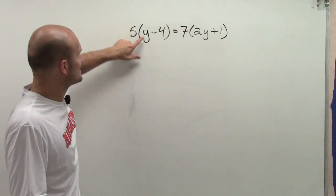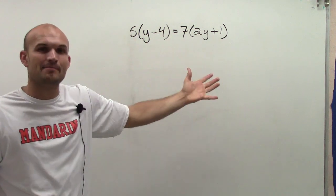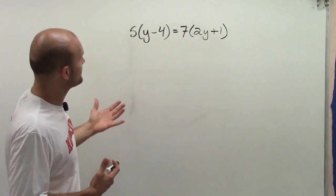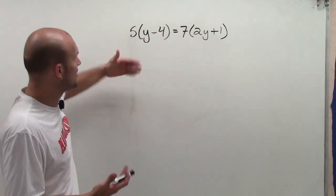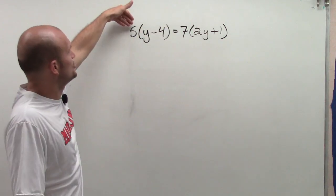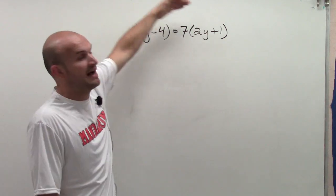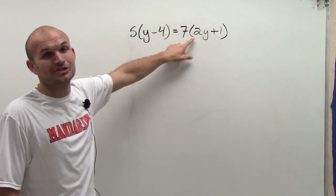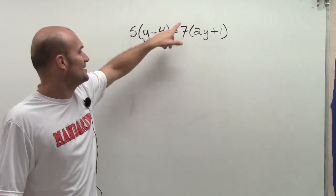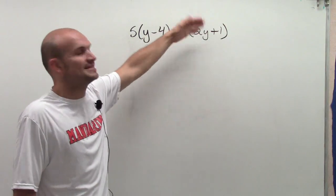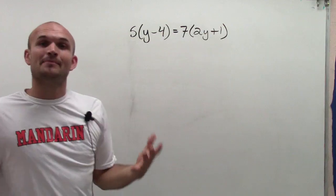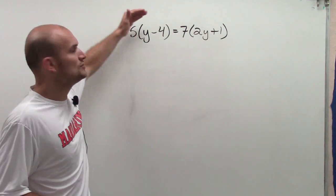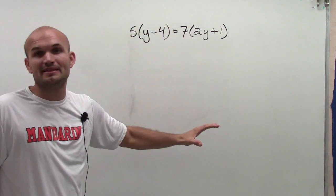Because I can't see my variable — in both of these instances it's inside my parentheses. So I can't undo the operations until I get rid of what's happening. You can theoretically undo multiplying by 5 by dividing by 5 on both sides, but then you're going to have 7 times 2y plus 1 divided by 5, which makes things very complicated. So what I would recommend is use the distributive property to get rid of your parentheses.